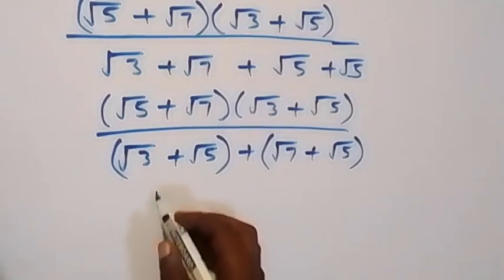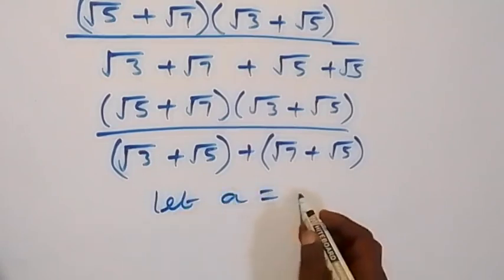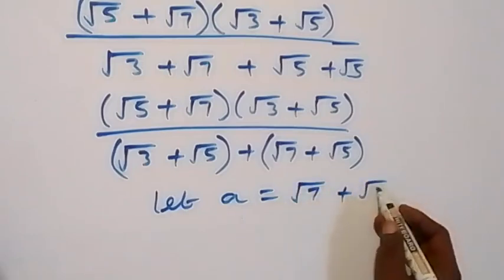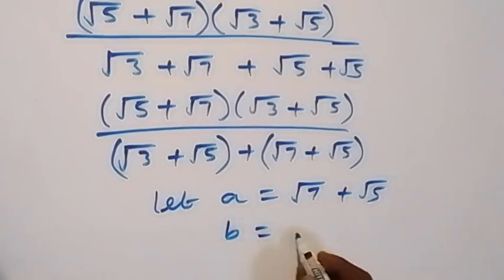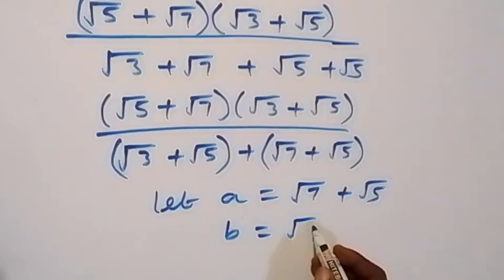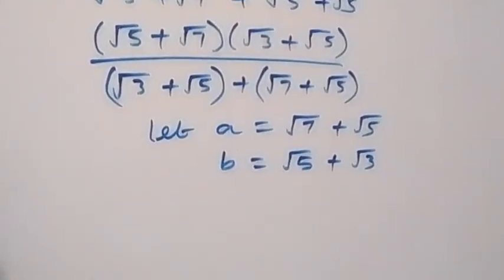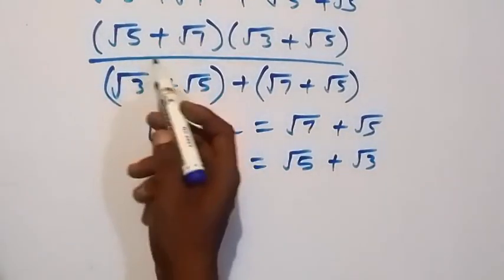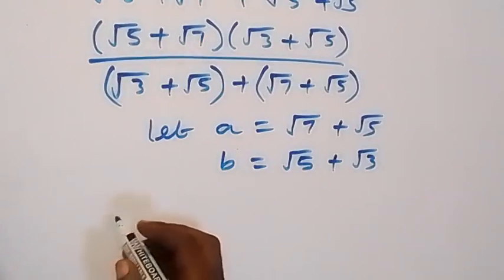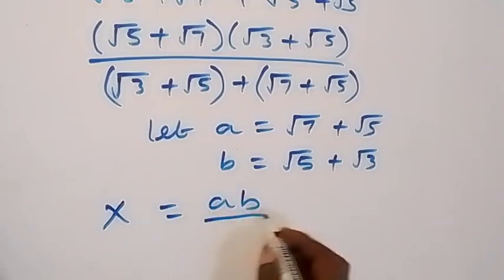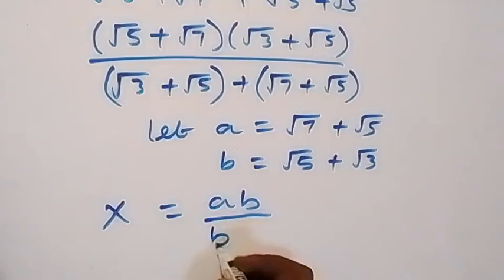We can use a letter to represent each of them. So let a equal root 7 plus root 5, and let b equal root 5 plus root 3. From there, let x be equal to a times b over b plus a, so we have x = ab / (b + a).